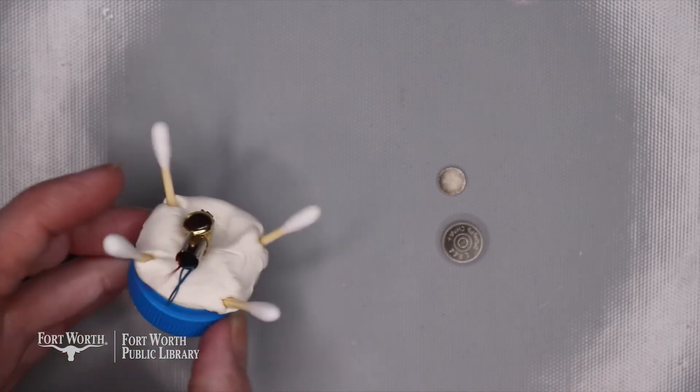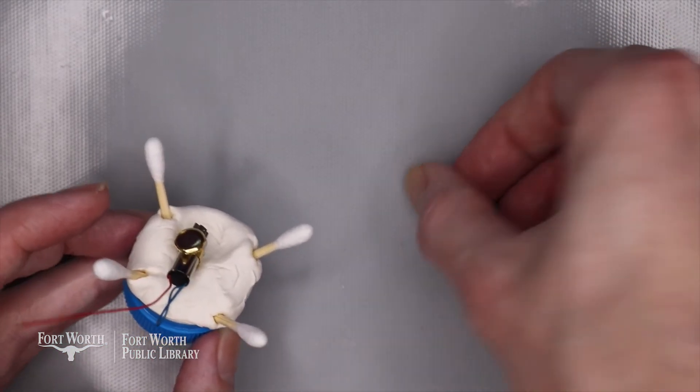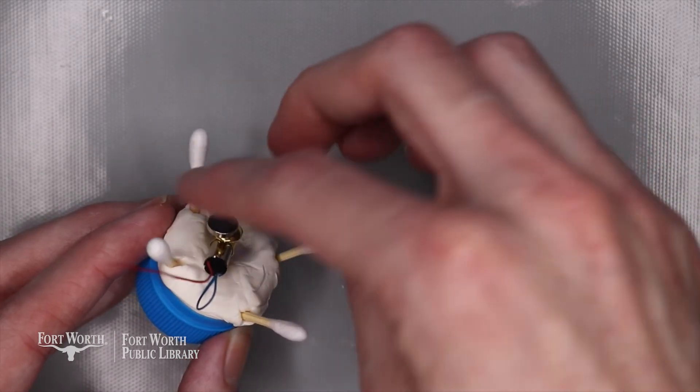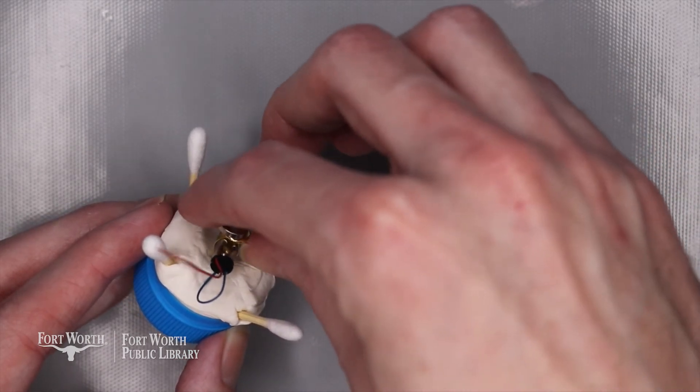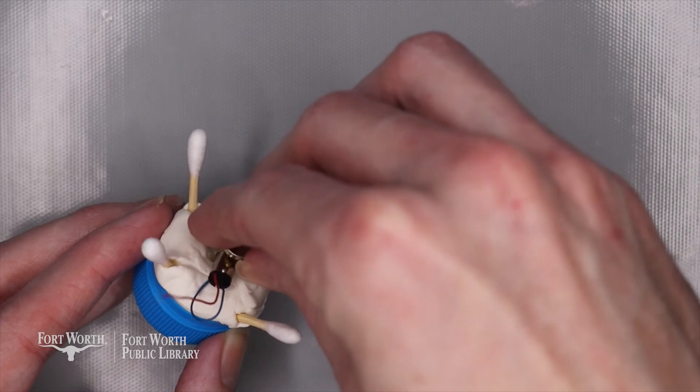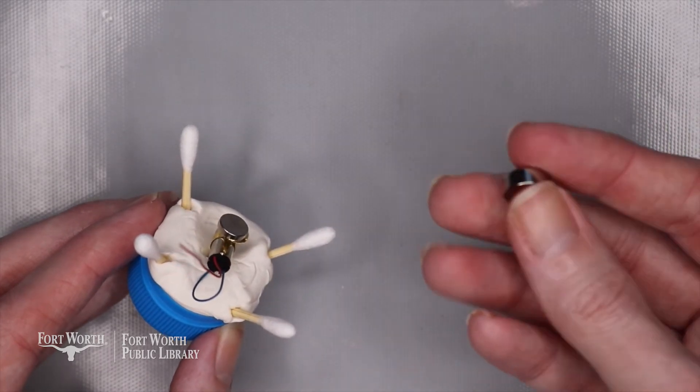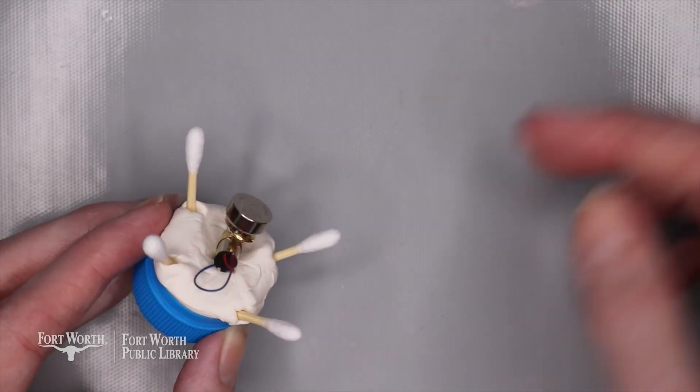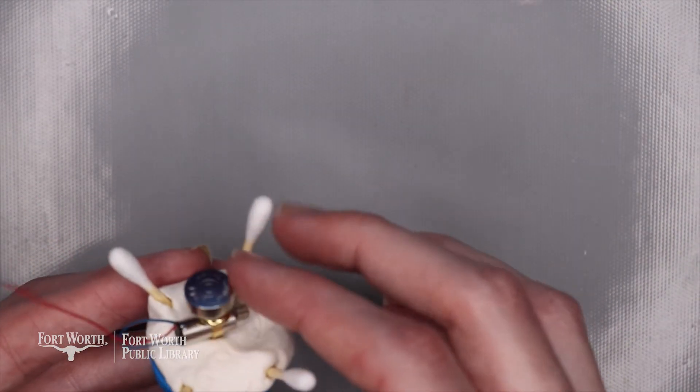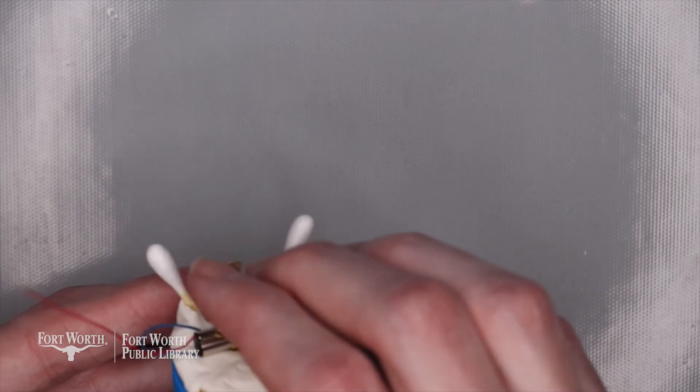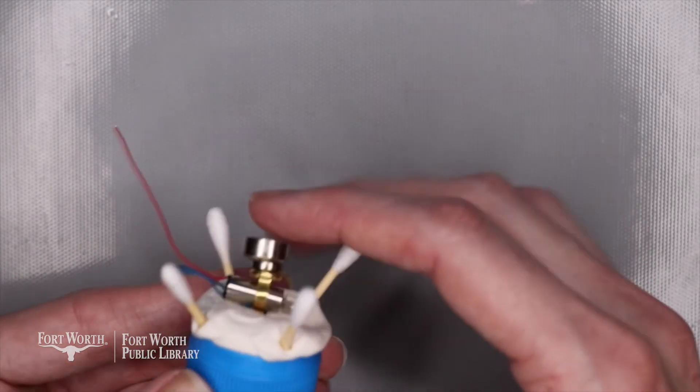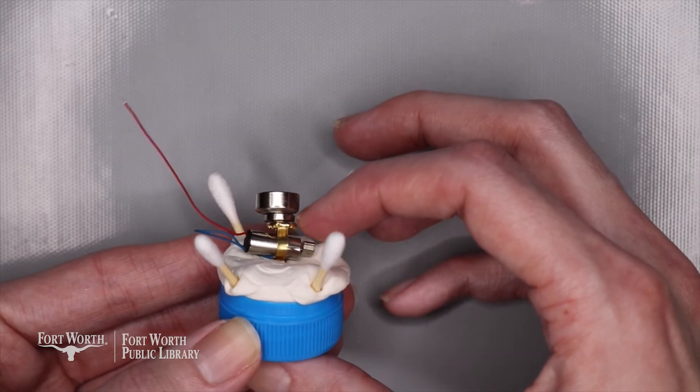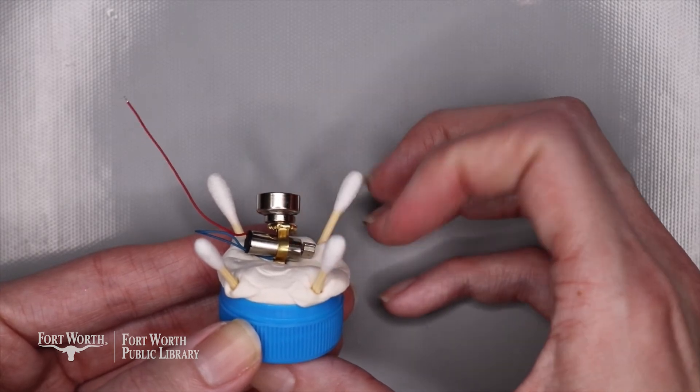Next up, I'm going to take my magnet and my battery. I'm going to take the magnet and place it onto the brad that's touching the motor. And then I'm going to take my battery and just stick that on. So here's the top of the brad, then we have our magnet, and then we have our battery.